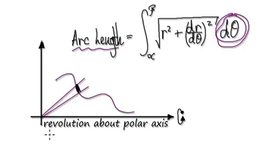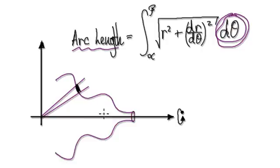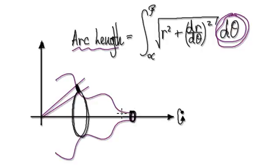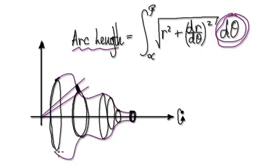So if you want to know the surface area being revolved 360 along the polar axis, you would need to multiply the arc length with the circumference of this circle here.